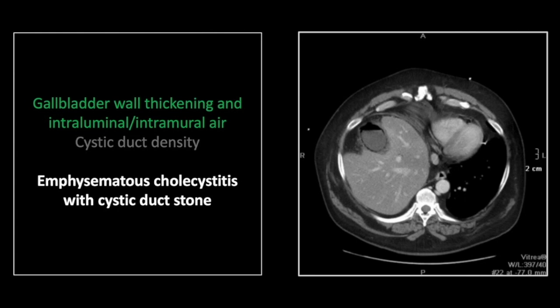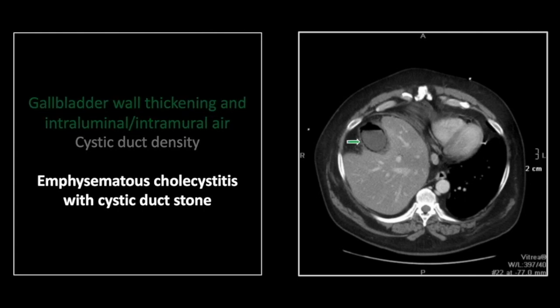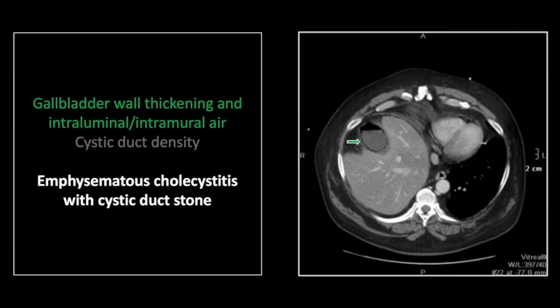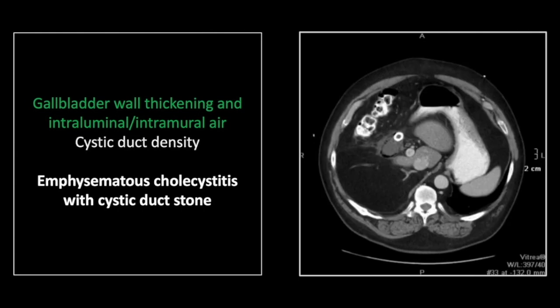Our next case is emphysematous cholecystitis. This is the bane of ER physicians. These patients, frequently diabetic, frequently present with generalized illness and no localizing symptoms, so it can be a real diagnostic coup to pick this up. The question is always, with emphysematous organs in general, is it intramural or intraluminal gas that we're looking for? And the answer is both. Most likely it will start within the wall, but frequently quickly progress to intraluminal, and you can see some cases where there is just intraluminal gas.